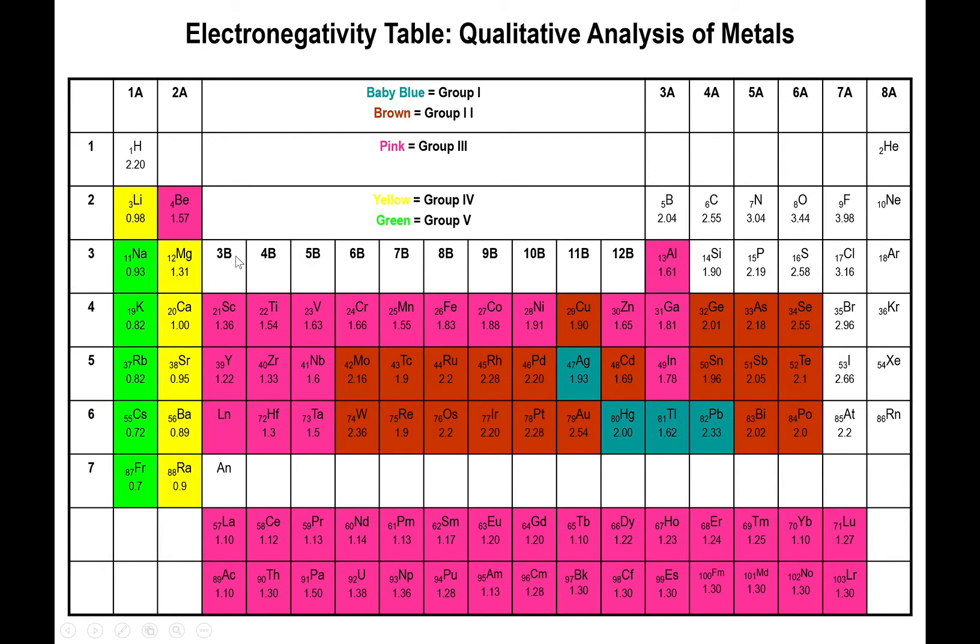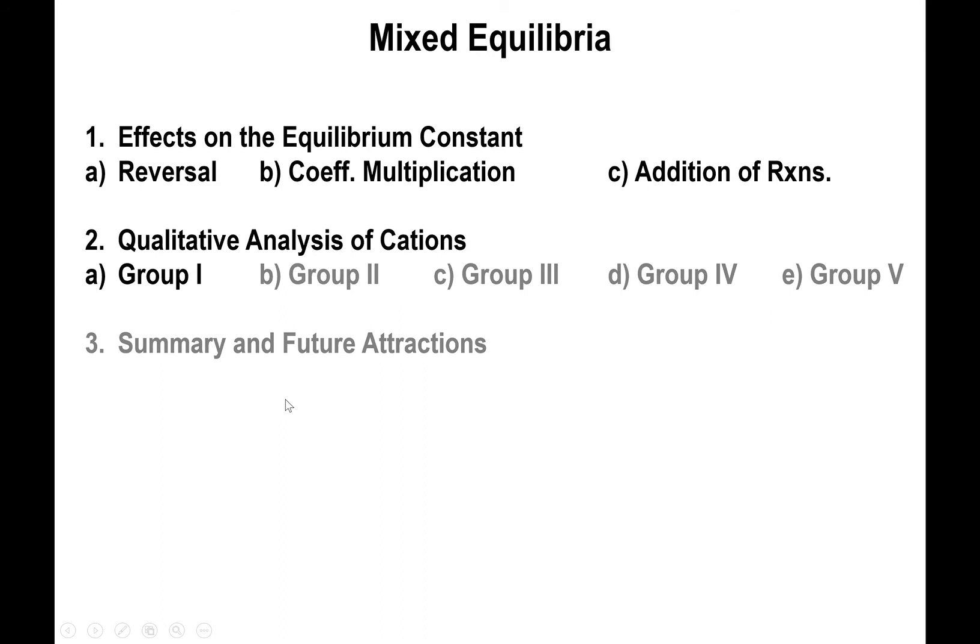And by the end, you get to group 5. Those are pretty much the elements that remain in solution the entire time through. So you don't necessarily get them out of solution, but those will be the ones left over after you apply all the chemical changes. All right, so I want to show you specifically how this happens. Let's start with the group 1.